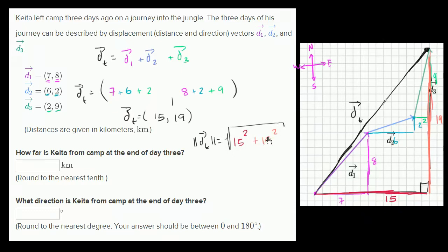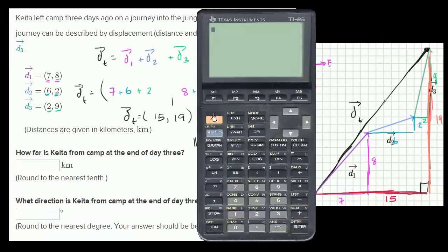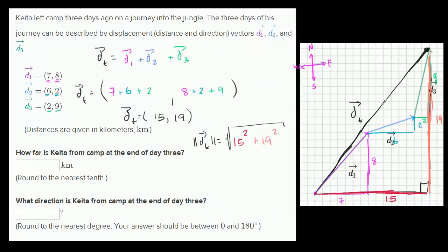Let me get my calculator out. The square root of 15 squared plus 19 squared gives us 24.2, rounding to the nearest tenth. So Kida is 24.2 kilometers from camp.